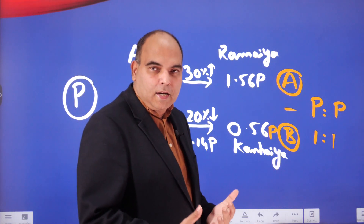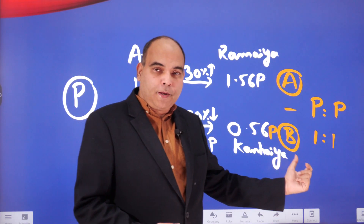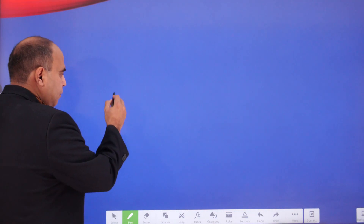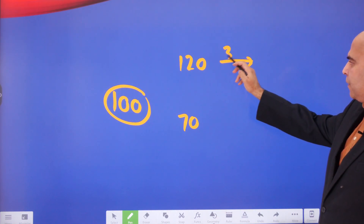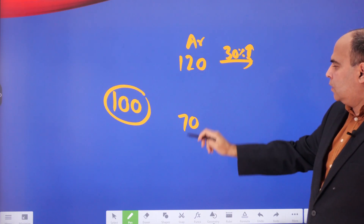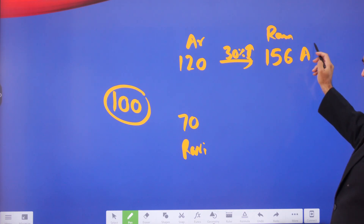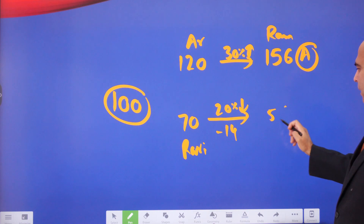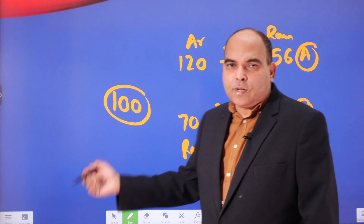You can actually do this whole thing mentally — it's largely paper-and-pen free if you keep reacting. An even better way: instead of taking the purchase price as P, take it as 100. Then Arun buys at 120, Ravi buys at 70. Arun sells at a 30 percent profit to Ramaya, so Ramaya buys at 156 — that's A. Ravi sells at a 20 percent loss to Kaneya: 20 percent of 70 is 14, so Kaneya buys at 56 — that's B.